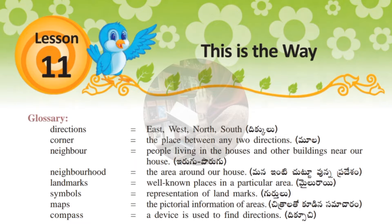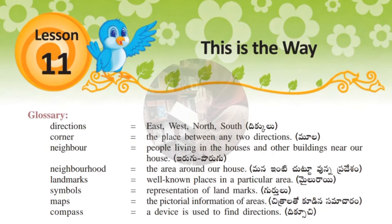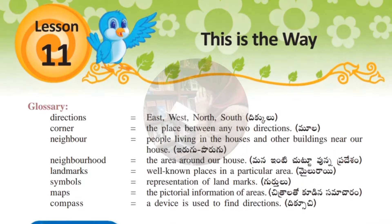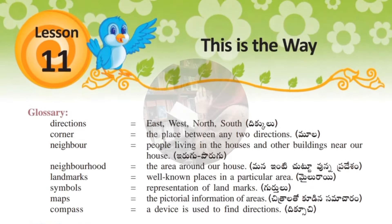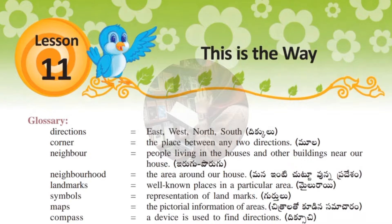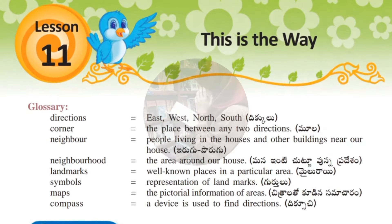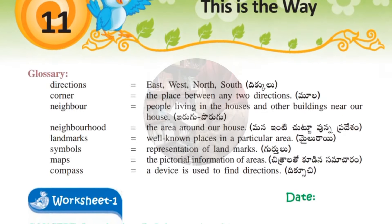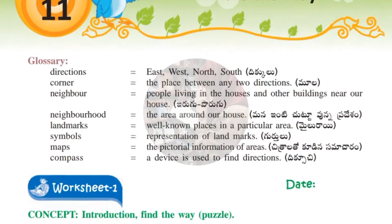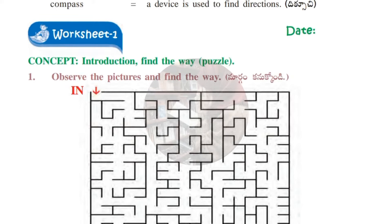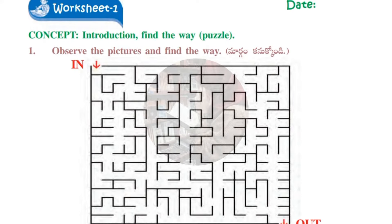These are all the synonyms you need to buy hard for your kids. First one is 'direction,' which means east, west, north, south. Next 'corner' — the place between any two directions. Next 'neighbor' — person living in houses near our house. Next 'neighborhood' — the area around our house. Next 'landmarks' — well-known places in a particular area. Next 'symbols' — representation of landmarks. Next 'maps' — pictorial information of areas. Next 'compass' — a device used to find direction.